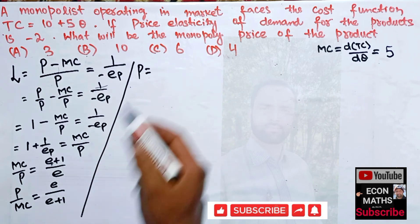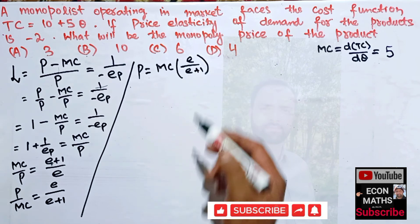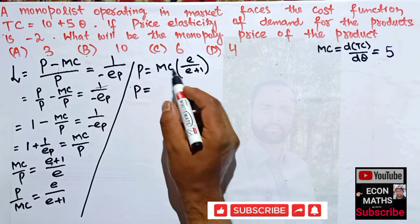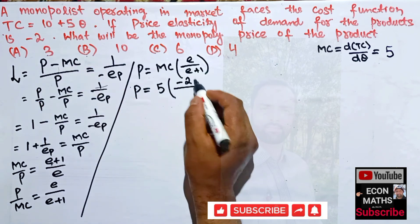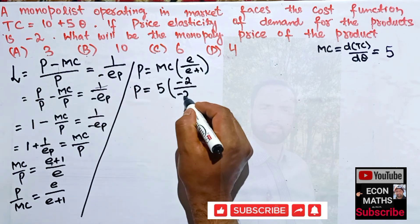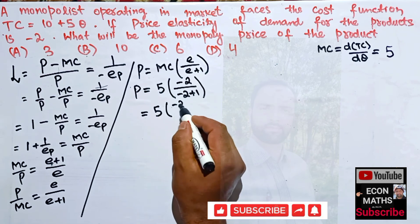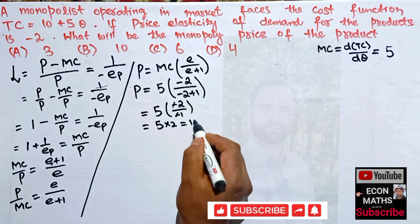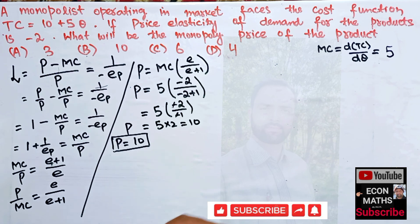The monopoly price equals marginal cost times E/(E + 1). Substituting MC = 5 and E = -2: P = 5 × (-2) / (-2 + 1) = 5 × (-2) / (-1). The negatives cancel, giving 5 × 2 = 10. So the profit-maximizing monopoly price is 10.